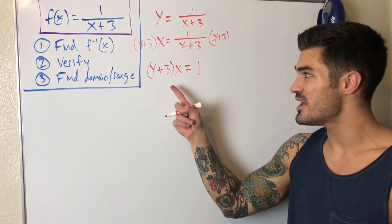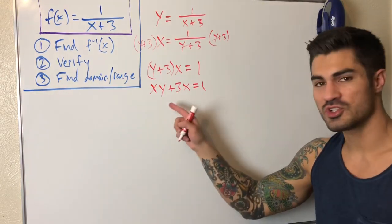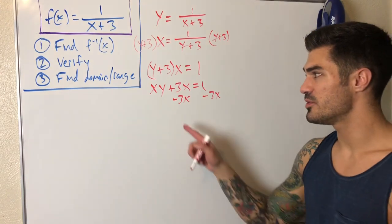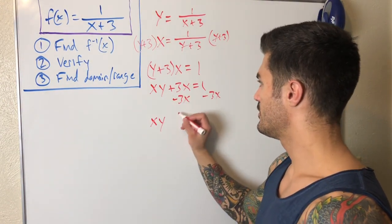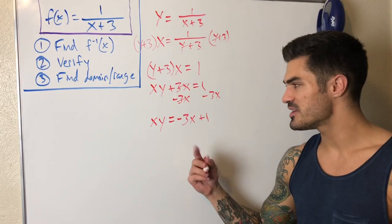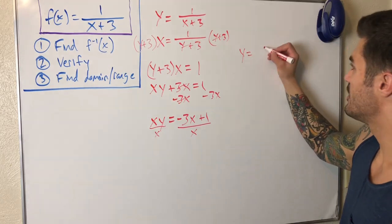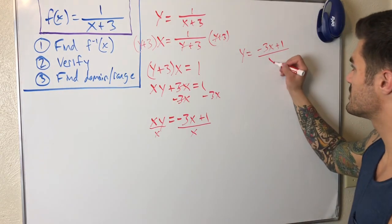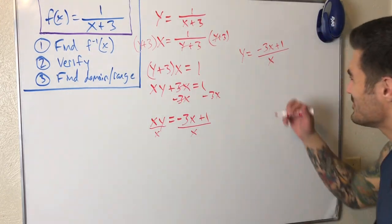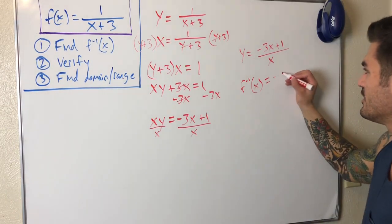I distribute x into the parentheses: that gives xy + 3x = 1. Now I'm solving for y, so I move the 3x over: xy = -3x + 1. I prefer to write it as negative 3x plus 1. My last step is to divide both sides by x to get y by itself: y = (-3x + 1) / x. Then I replace y with inverse notation, giving us f⁻¹(x) = (-3x + 1) / x.